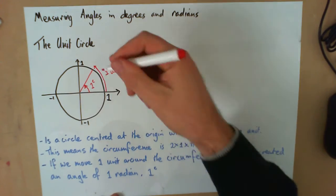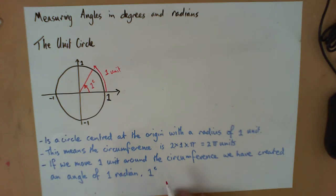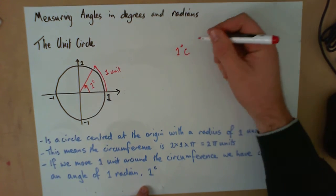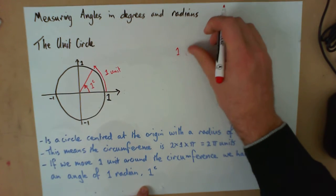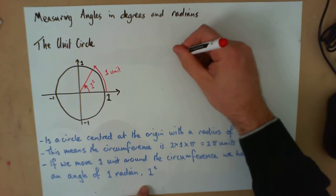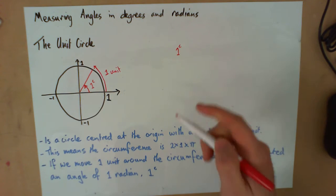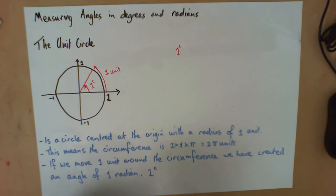We've created an angle of 1 radian. Now it's 1 little c up there - don't confuse that with 1 degree Celsius, it's not that. It's just 1^c for radian. I'm not sure why it's c, maybe it's got something to do with circumference, but little c is the unit we use.